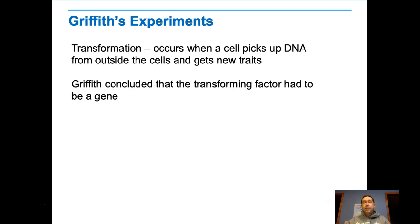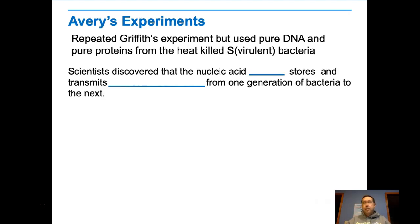Griffith concluded that the transforming factor had to be a gene. The next experiment was by Avery and several other researchers. They repeated Griffith's experiment using pure DNA and pure protein from the heat-killed S virulent bacteria. They extracted the cell parts and used enzymes to break down all the DNA to get pure protein, and enzymes to break down all the protein to get pure DNA. What they discovered was that when they injected the pure DNA, the mouse died, but when they injected just the pure proteins, nothing happened. So that seems to show that DNA, not protein, is the genetic information.